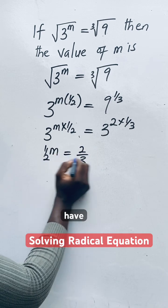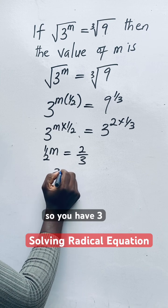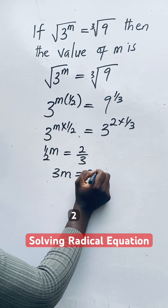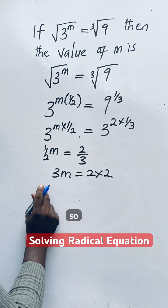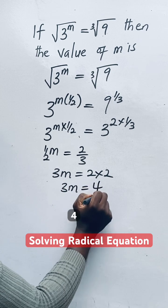So here now you have cross multiply. So you have 3M equal to 2 times 2. So here you have 3M is equal to 4.